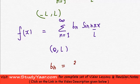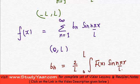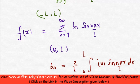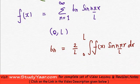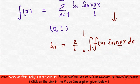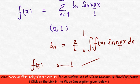Your bₙ is equal to 2 upon l times the integral from 0 to l of capital F(x) sin(nπx/l) dx. Because capital F(x) in the interval 0 to l is small f(x), you get the formula which is similar to the formula for your half-range cosine series. That is how you express a given function in the interval 0 to l as either a half-range sine series or half-range cosine series.